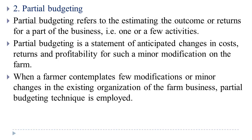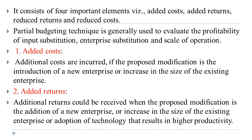Partial budgeting is a statement of anticipated changes in cost, returns, and profitability for a minor modification on the farm. When a farmer contemplates few or minor changes in the existing organization of the farm business, the partial budgeting technique is employed.